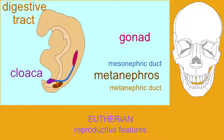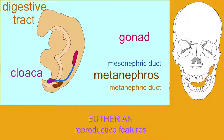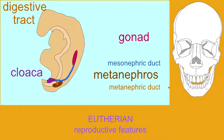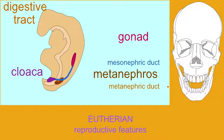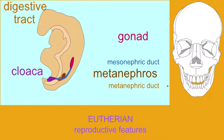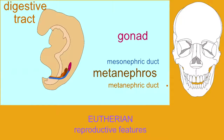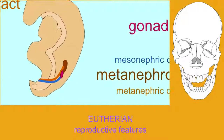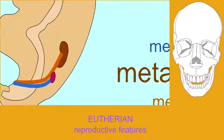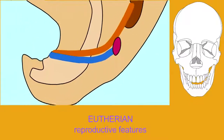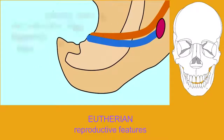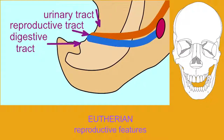Some of the changes which unite eutherian mammals involve the reproductive system, such as the reduction of the cloaca so that it is only retained as the vestibule in females, the change of the glans penis so that it is no longer forked as in marsupials, and early in eutherian lineages, the descent of the testes into the scrotum, which is a feature in males in most, but not all, eutherian mammals alive today.